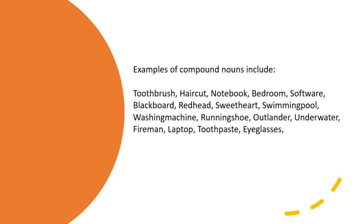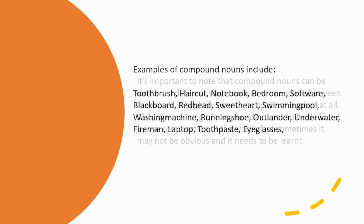Examples of compound nouns include toothbrush, haircut, notebook, bedroom, software, blackboard, redhead, sweetheart, swimming pool, washing machine, running shoe, outlander, underwater, fireman, laptop, toothpaste, and eyeglasses.